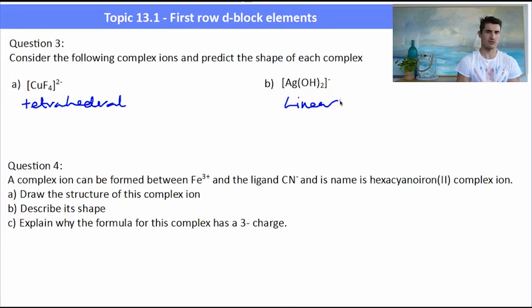Question four, a complex ion formed between Fe3+ and the ligand CN-. Have a go at that, bring it to class and we'll see how we've gone. Draw the structure, describe the shape, explain.